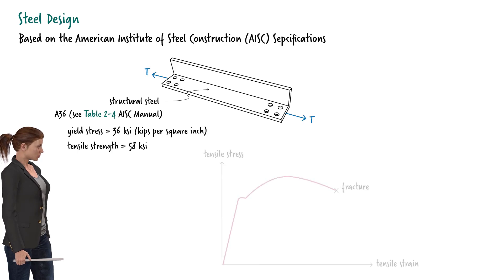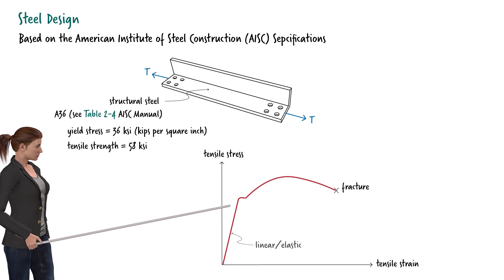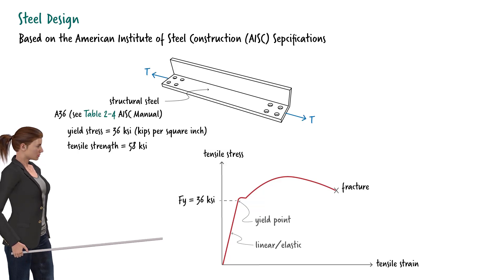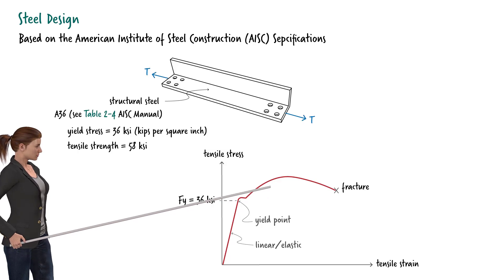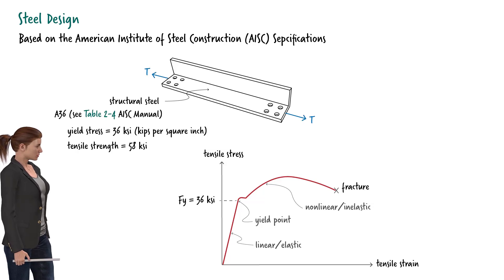Here is the general shape of the stress-strain diagram for structural steel. The initial part of the diagram resembles a straight line, meaning that steel behaves linearly below a certain point — we call this the yield point of the material. The tensile stress at the yield point is called the yield stress. For A36 steel, the yield stress is 36 ksi.